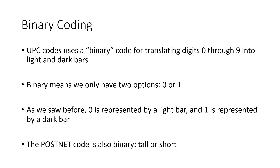This is a binary code. Binary just means that there are two options for each digit — in this case, only zeros and ones representing light and dark. PostNet code is also a binary code, because each bar there had two options: tall and short. It turns out that binary codes are really perfect for machines and computers to process.